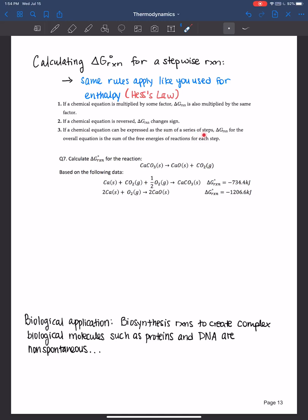If a chemical equation can be expressed as the sum of a series of steps, then the Gibbs free energy for the overall equation is the sum of the free energies of reactions for each step. Same rules like you learned with Hess's law.